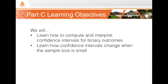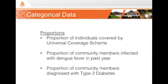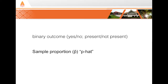When we talk about categorical data, our summary statistic of choice is the proportion. The data is not continuous, so we cannot compute a sample mean. Situations where we look at a proportion include the proportion of individuals covered by a universal coverage scheme, or the proportion infected with dengue fever. For each individual in our sample we record a binary outcome, and from that we compute our sample proportion, or p-hat.